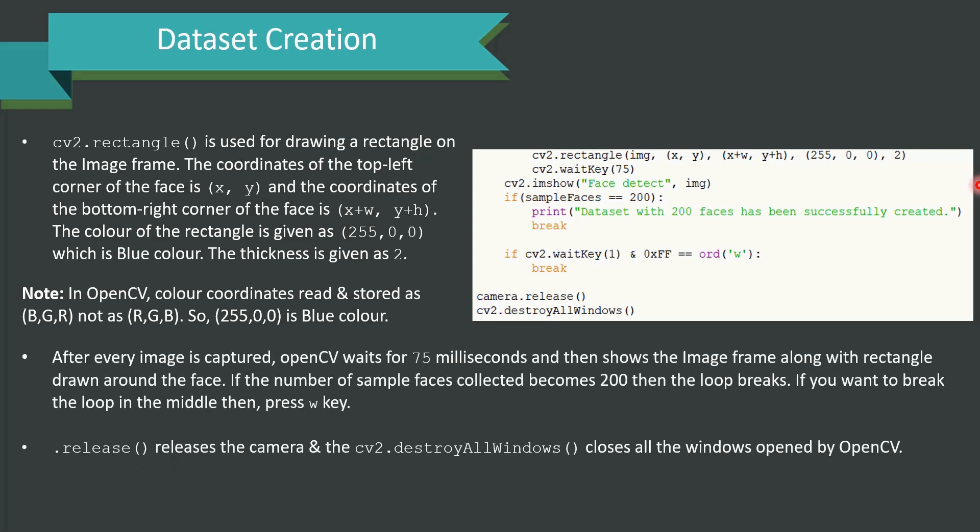After every image is captured, OpenCV waits for about 75 milliseconds as instructed in the code and then shows the image frame along with the rectangle drawn around the face. If the number of sample faces collected becomes 200 then the loop breaks. If you want to break the loop in the middle then you can press the W key. .release releases the camera and cv2.destroy_all_windows closes the window opened by OpenCV. Kindly note that if you already have the facial dataset then you can change the name of the images as id.sample_number and paste them in the dataset folder.